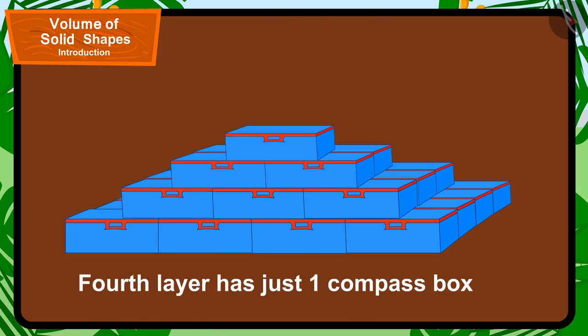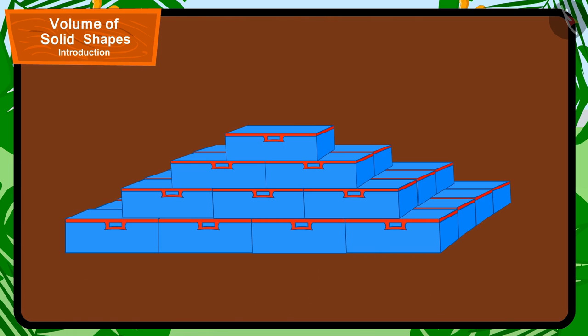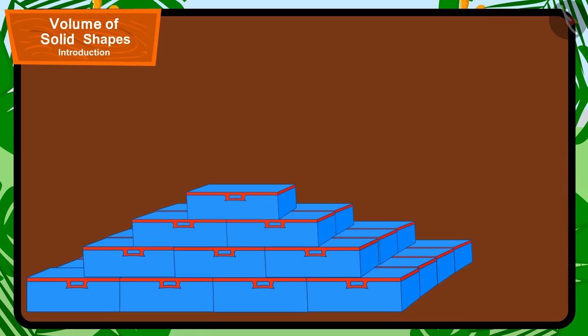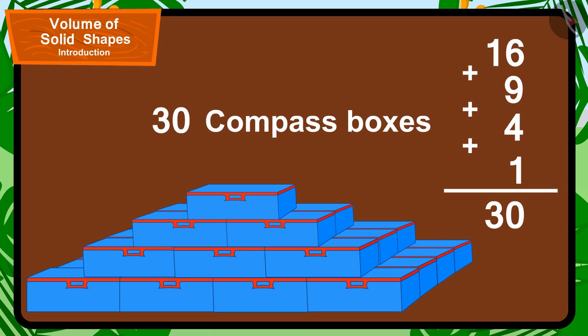And finally, the fourth layer has just one compass box. Thus, to find the total number of compass boxes in this shape, we need to add the number of compass boxes that are included in all these layers. So, in this shape, by adding 16 plus 9 plus 4 plus 1, we get 30 compass boxes.